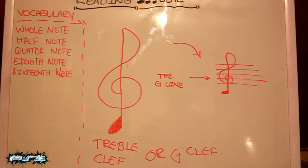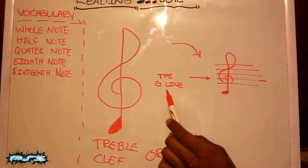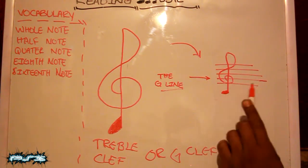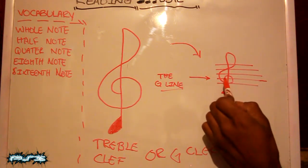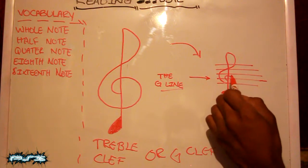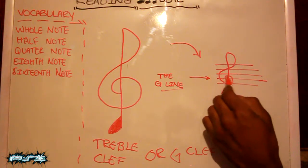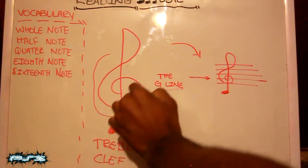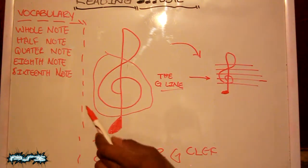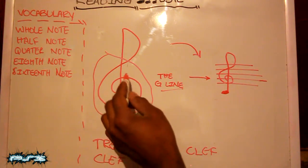And the reason it gets the name G clef is because, you notice here I've written the word the G line, because when you look at the lines in the measure you'll see that the note G actually falls right in the center of this part of the clef.